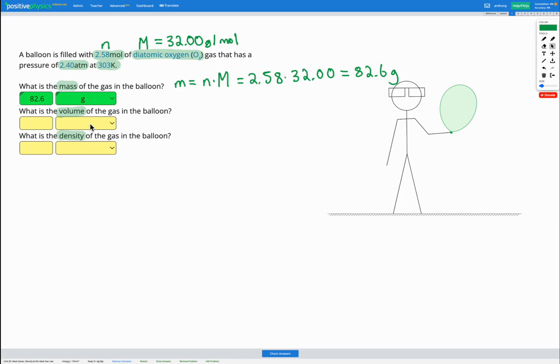So that was our first step. We used the molar mass of our substance, along with our equation for the mass, in order to find the mass of gas in the balloon. Our next step is finding the volume of gas in the balloon.